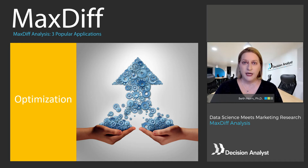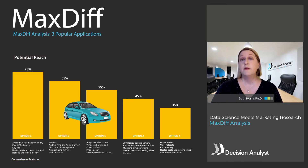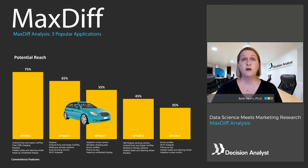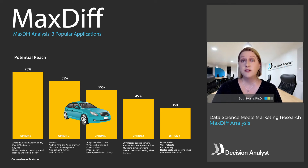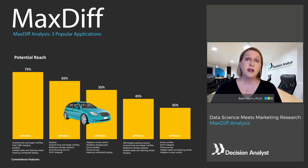The second popular application of MaxDiff is to optimize sets of items. The results derived from the MaxDiff can be used to develop optimal combinations using a TURF-like optimization algorithm. The algorithm searches for the combination of items that reaches the most consumers. Companies use results like this to build optimal product lines, flavor lines, or even optimal bundles of messages to use when marketing a product.